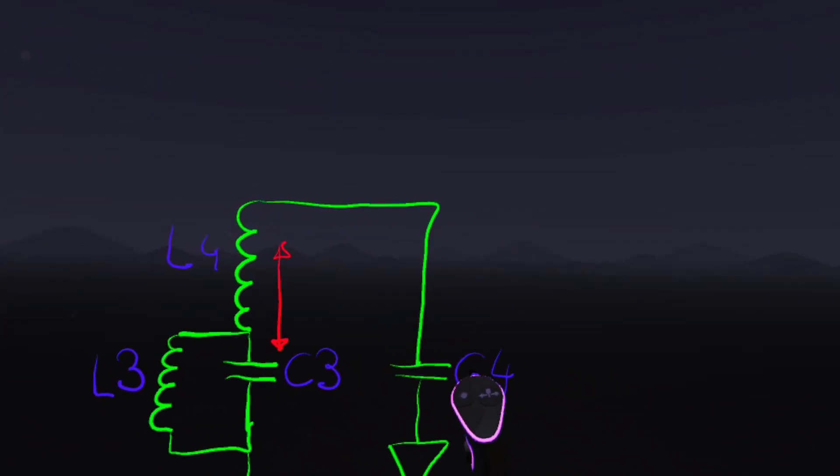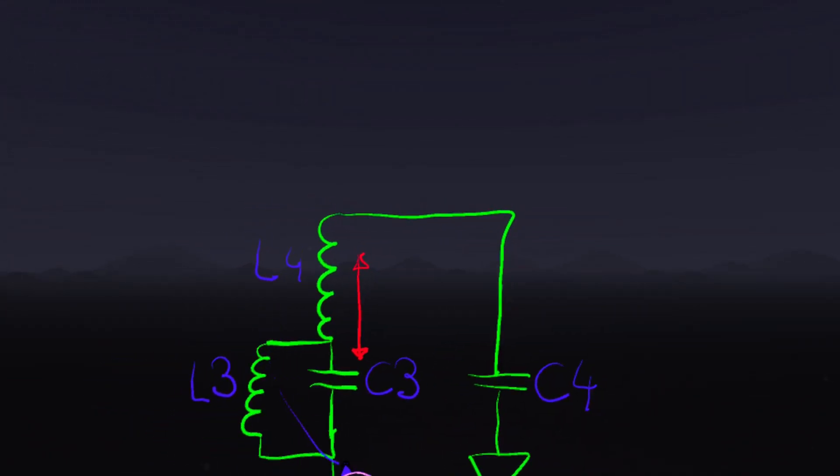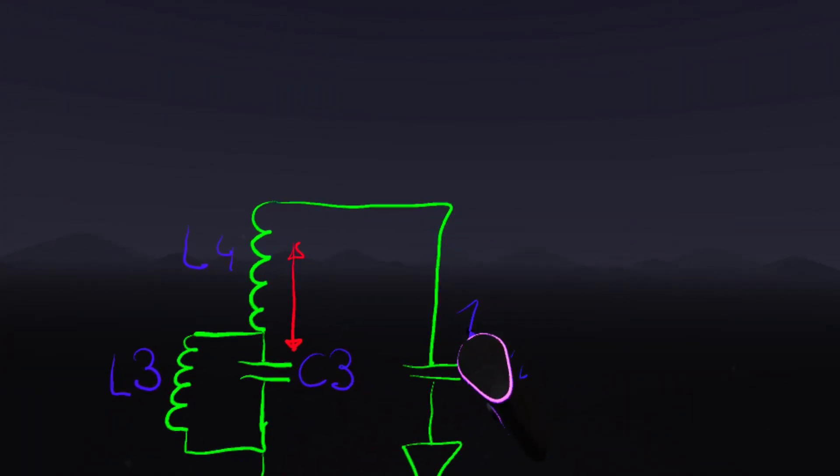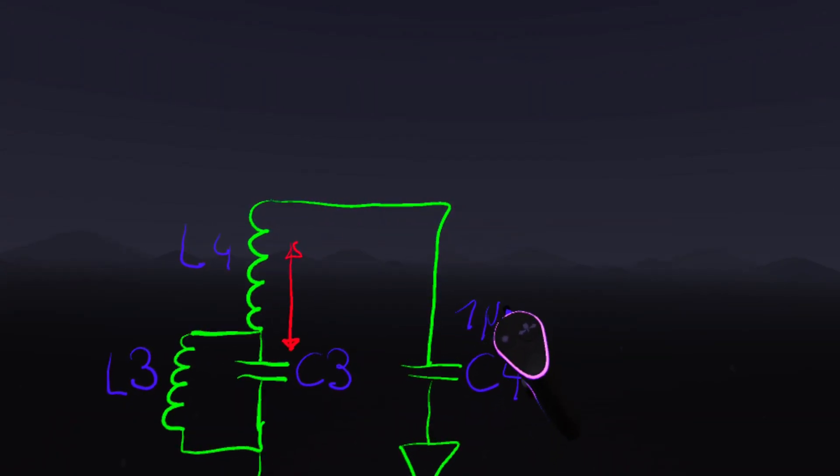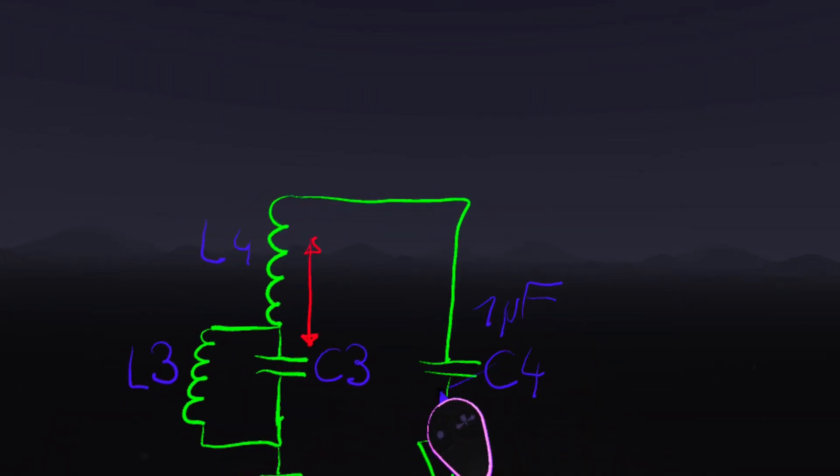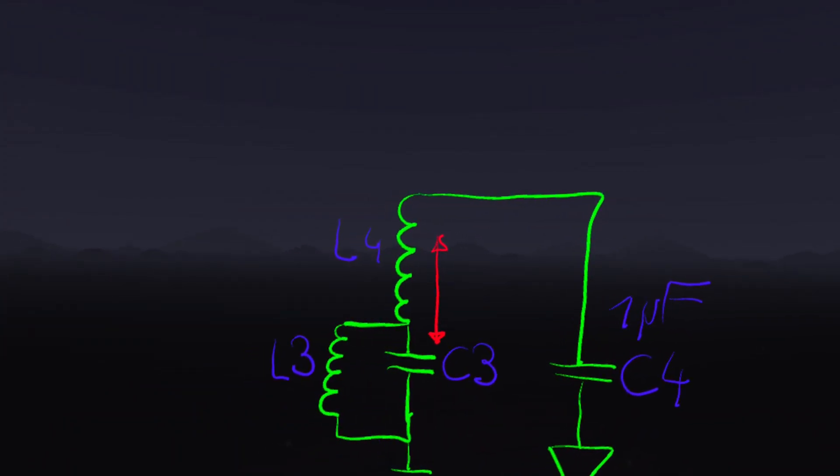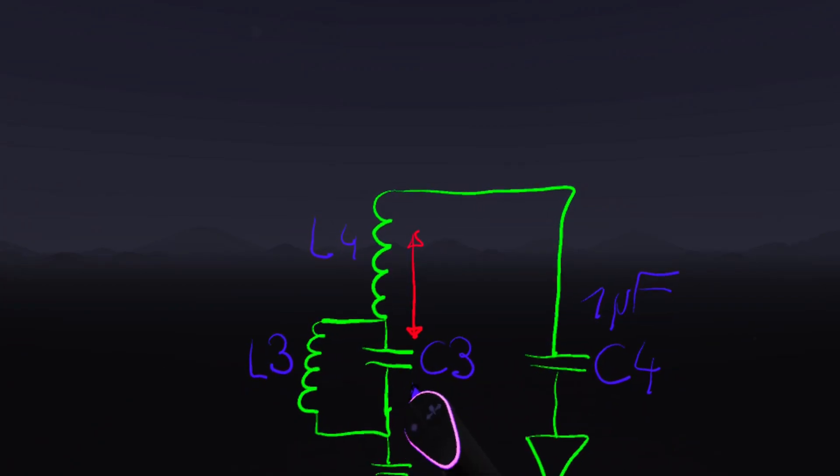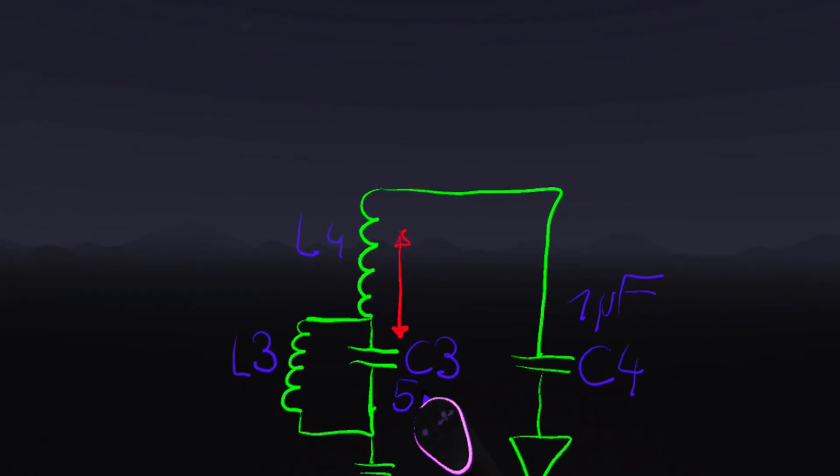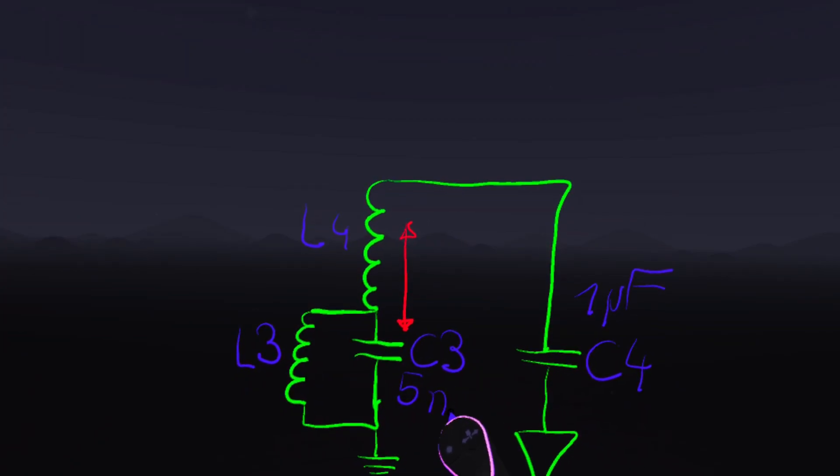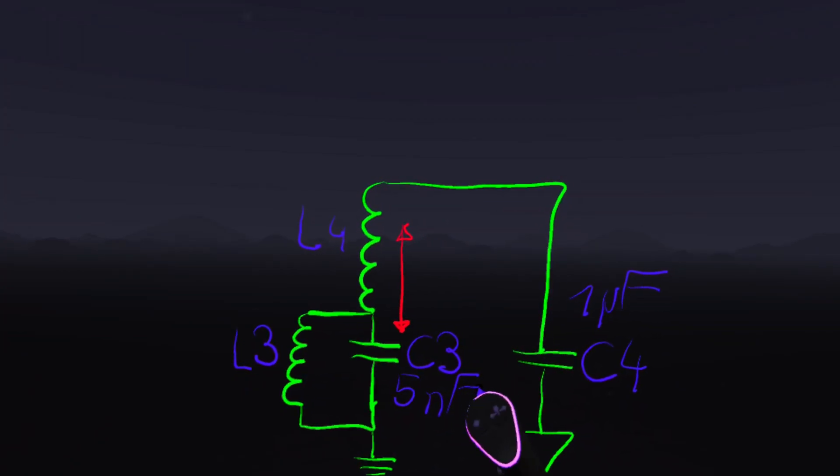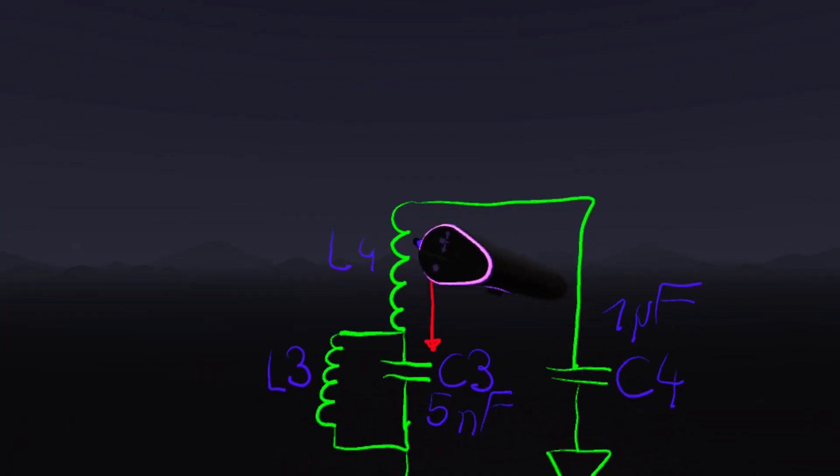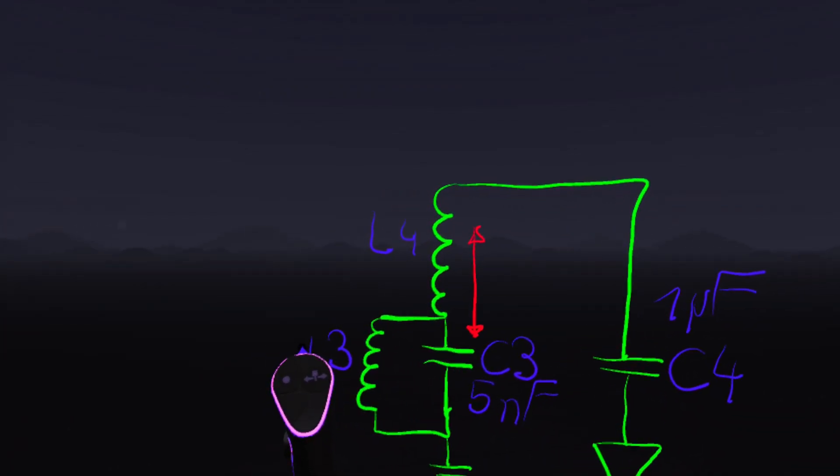So this is the grounding capacitor for L4, and it should be very large—for instance, one microfarad—while C3, which is the resonant tuning capacitor, is fairly low, for instance five or eight or ten nanofarads. So it has a big difference in size. This way L4 can become series resonant with C3 while at the same time L3 is parallel resonant with C3.